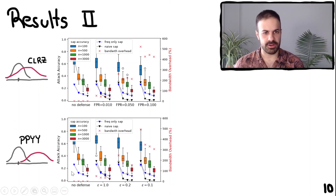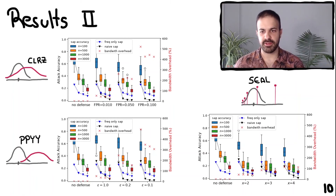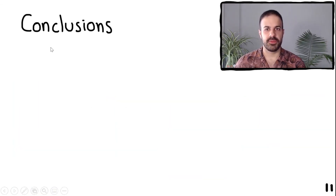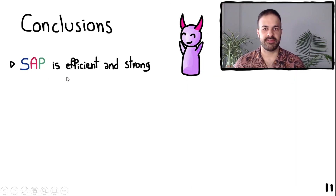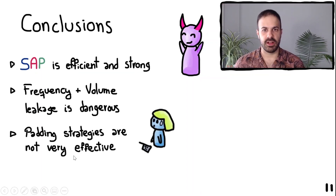The results for the Laplace noise defense are very similar — even when configured to hide values of the differential privacy parameter epsilon, our adapted attack remains effective. SEAL, however, proved to be a significantly stronger defense: attack accuracy decreases as we increase the privacy parameter. The red crosses show the bandwidth overhead resulting from padding keyword volumes. For a given bandwidth overhead, SEAL is the best defense strategy because it reduces accuracy the most. We conclude that volume padding strategies are in general not very effective against our attack since we can adapt against them, and therefore hiding the search pattern and query frequency is very important.